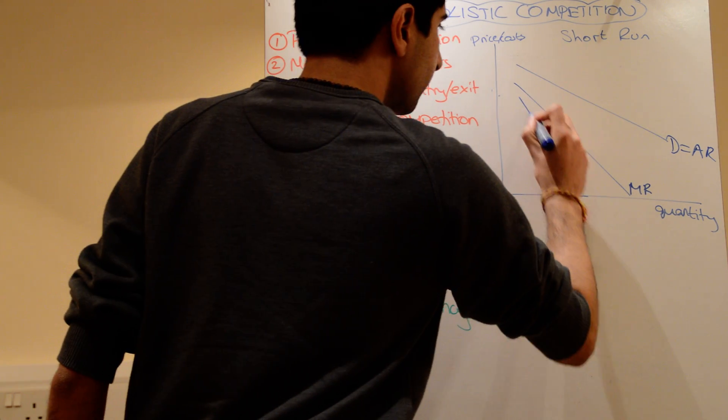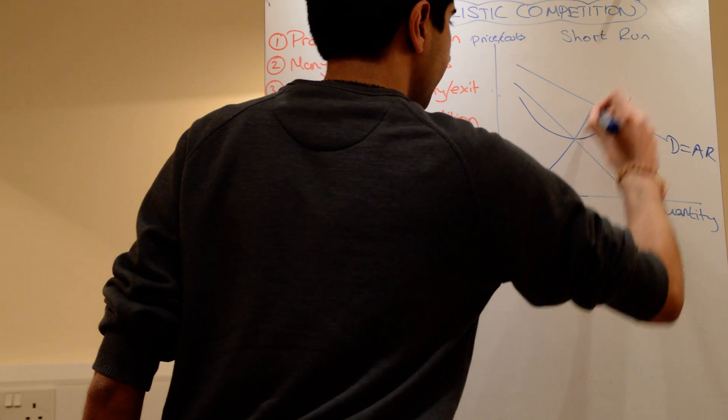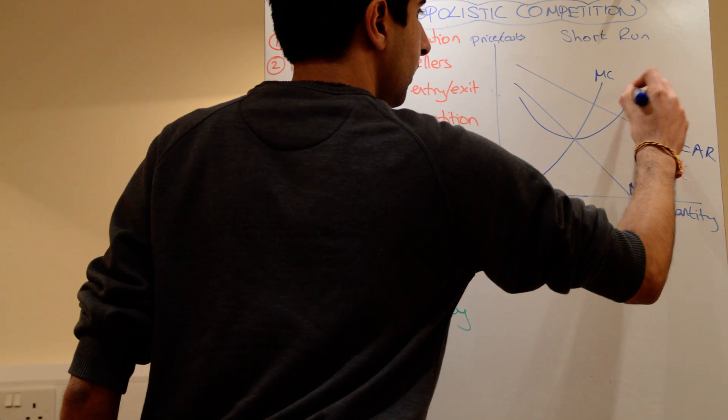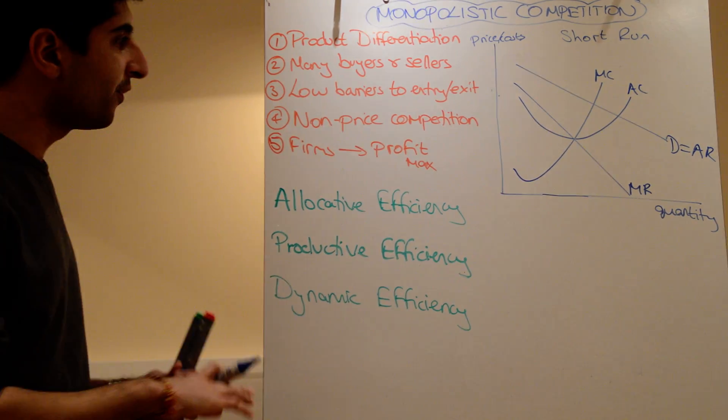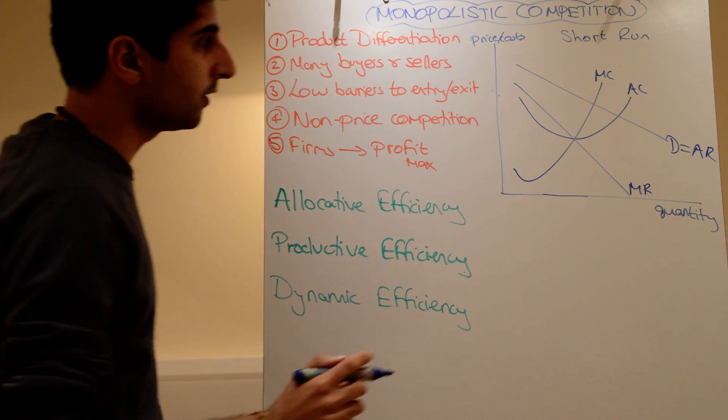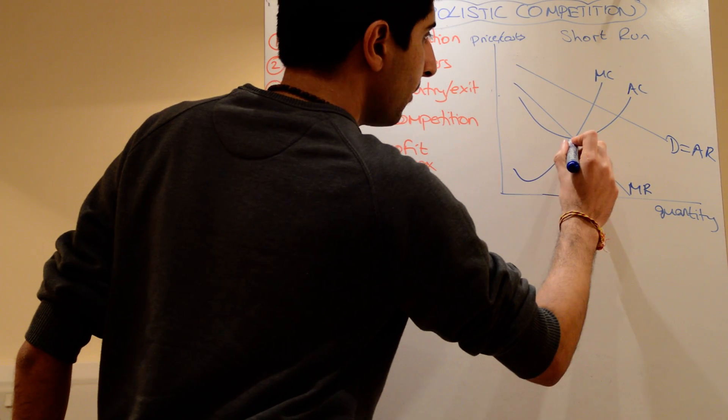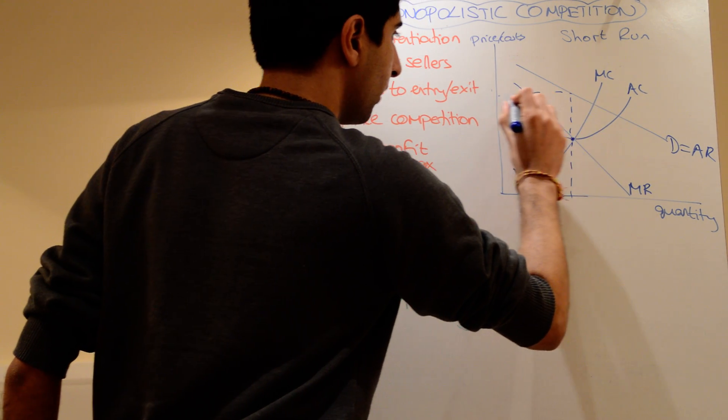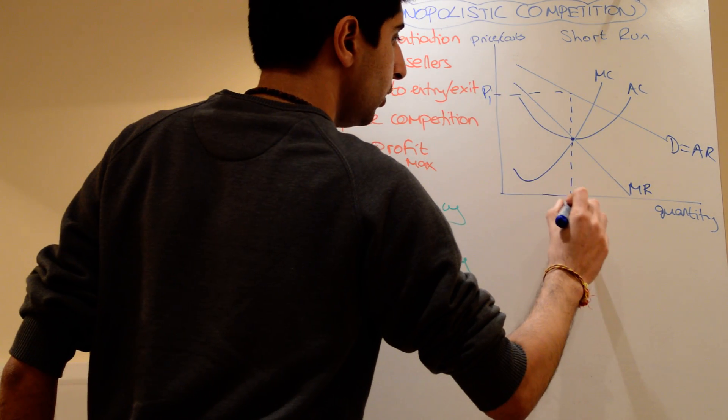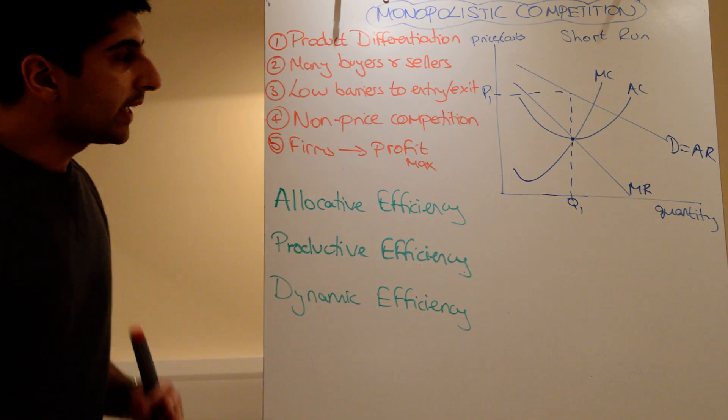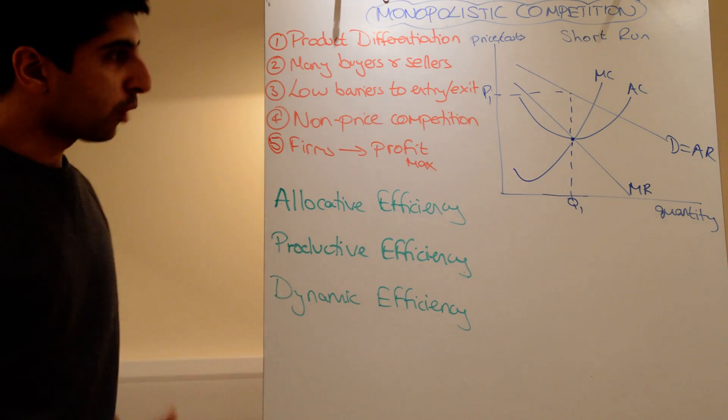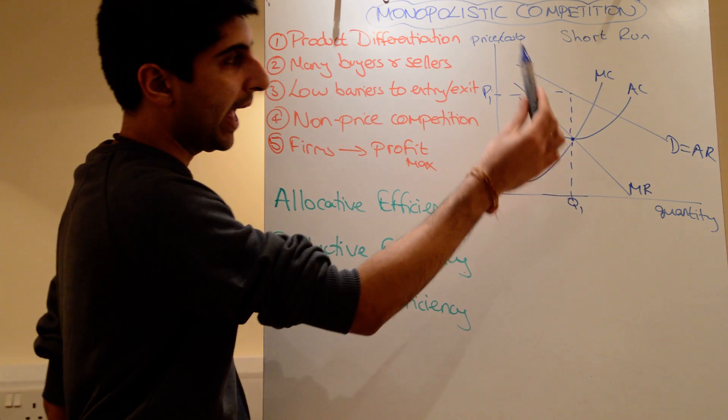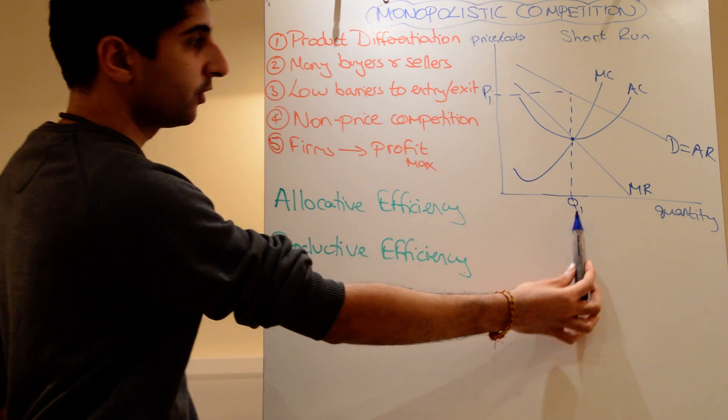The rest is just as normal. So we have our cost curves, and again, we assume firms do profit maximizers, which means they produce where MR equals MC. And that takes us to a price of P1 and quantity Q1. Again, we need to work out where the profits are being made. To do that, we compare AR and AC at quantity level Q1.